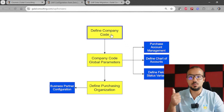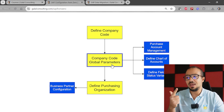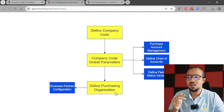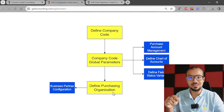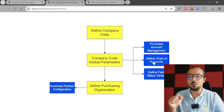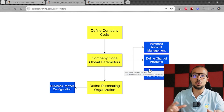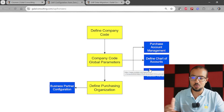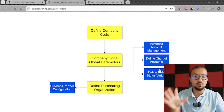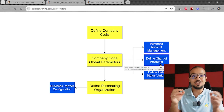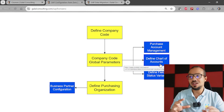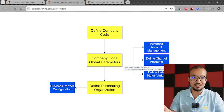In our playlist, the main steps are colored in yellow — any yellow box is something we have to go through. The blue boxes are the deep-dive videos where I explain additional features. For example, we started with Define Company Code, then Company Code Global Parameters, then Define Purchase Organization. The blue boxes are videos already on the channel that I've now connected together, so this playlist is going to be comprehensive.